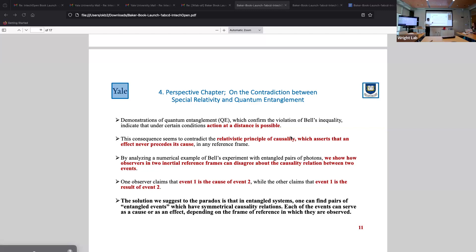So, in some experiments you can have where event one is the cause of event two, while the other one claims that event one is the result of event two. And as it points out, the solution we suggest to the paradox is that in entangled systems, one can find pairs of entangled events, which have symmetrical causality relations. One can be cause and the other effect, and the other can be cause and the other effect. That is possible here. And it's shown in some of the references that are in this book chapter.